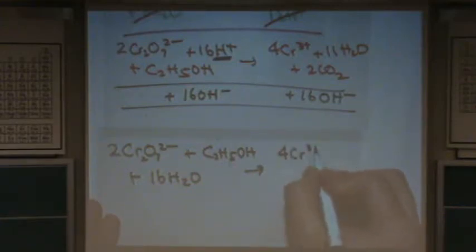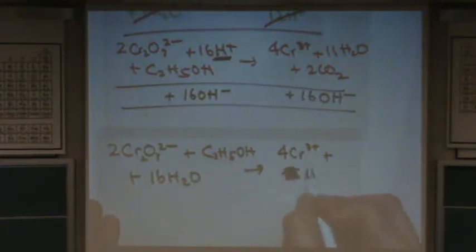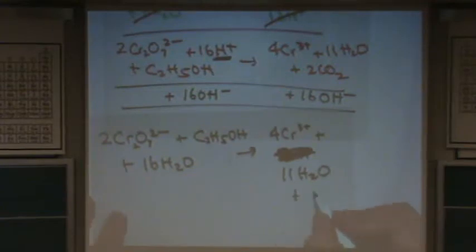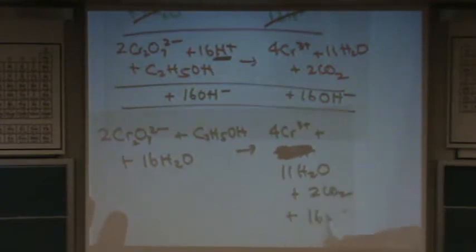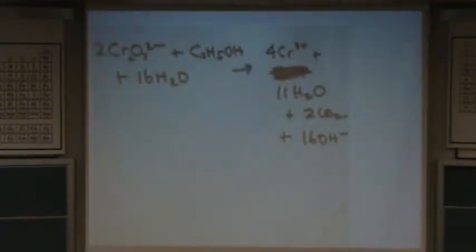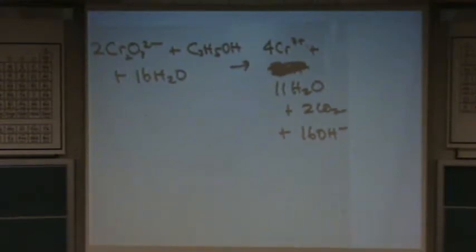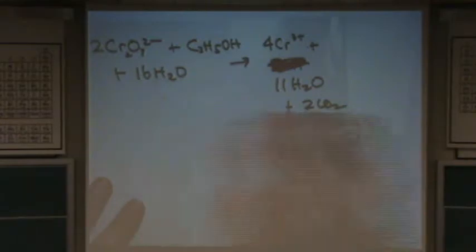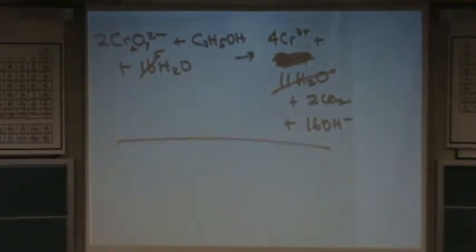16 waters. Now on the right-hand side, 4 Cr3+ plus 11 H2O plus 2 CO2 plus 16 OH minus. Now I just have to simplify. There's 16 and 11 waters. So that cancels out to make 5. So now I just re-add it. I'm just simplifying right now. Two dichromics.